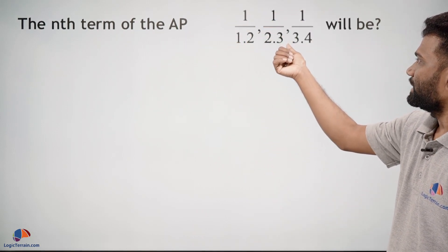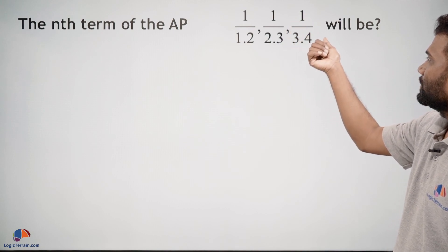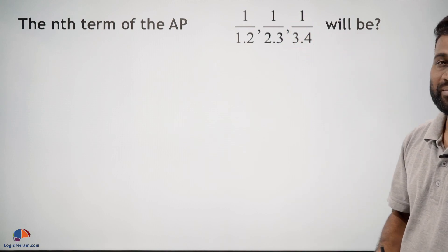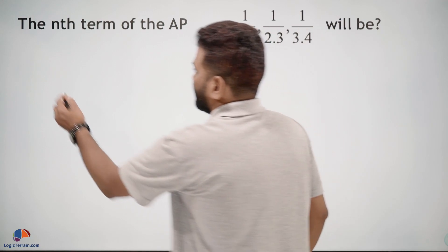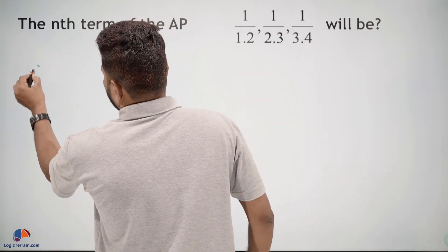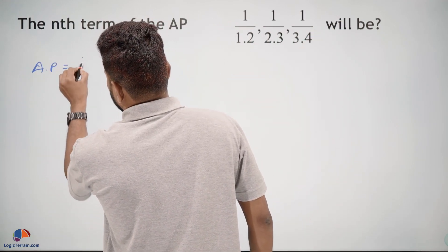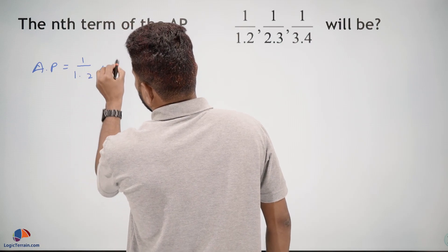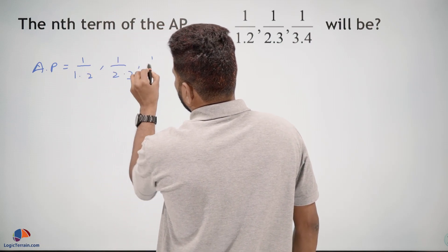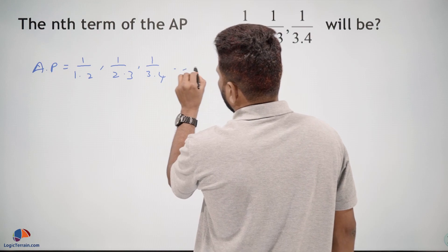1 upon 2 into 3, 1 upon 3 into 4, and so on, will be? So here we are given an AP: 1 upon 1 into 2, 1 upon 2 into 3, 1 upon 3 into 4, and so on.